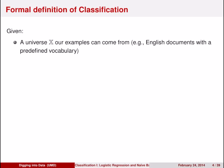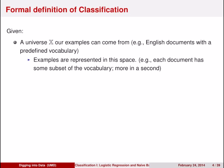For the classification problem, you're given a universe x from which your examples can come. This universe might be, for example, all English documents with some predefined vocabulary. Your examples are represented in this space — each document has some subset of the vocabulary. In addition to this universe of examples, you also have a set of classes. For example, you want to label each document as either being about spam or not.